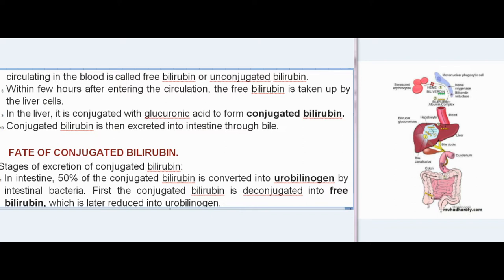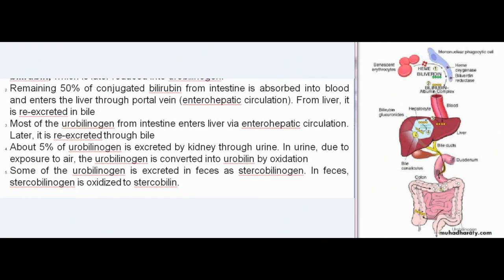Within a few hours after entering the circulation, free bilirubin is taken up by liver cells. In the liver, it is conjugated with glucuronic acid to form conjugated bilirubin, which is then excreted into the intestine through bile. In the intestine, 50% of conjugated bilirubin is converted into urobilinogen by intestinal bacteria — first it is deconjugated to free bilirubin, which is then reduced to urobilinogen. The remaining 50% is absorbed into blood and enters the liver through enterohepatic circulation, where it is re-excreted in bile.